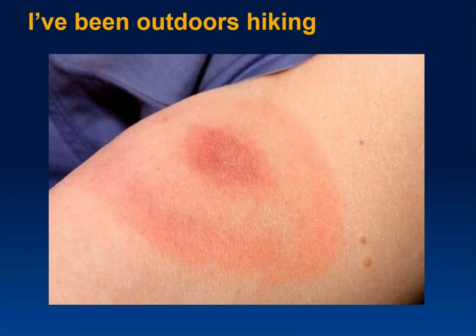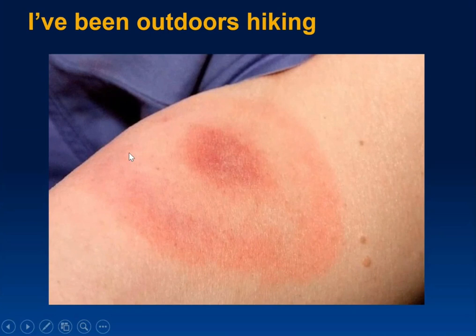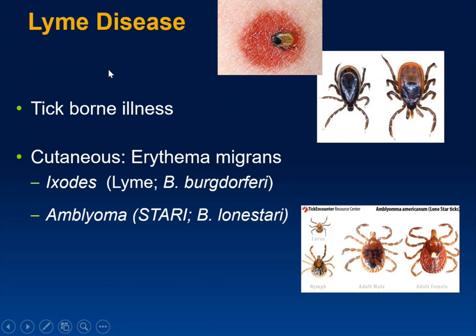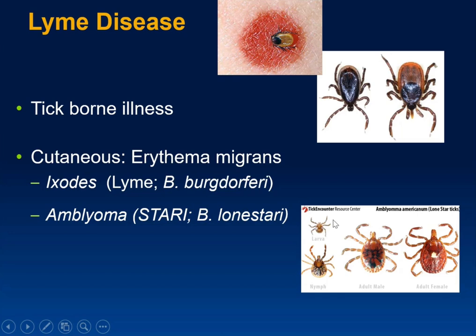Here's a person who has been out hiking. What do you see? It's a target or bullseye lesion — one central area, some clearing, and an outer margin. In the context of outdoor exposure, the most common diagnosis would be Lyme disease: erythema migrans, associated with Ixodes or Amblyomma ticks. The patient may not even know they were bitten, as the nymphal tick can be as small as the head of a pin.